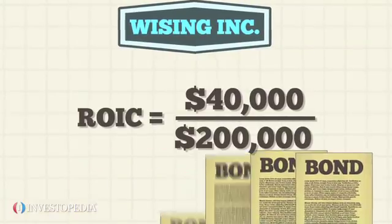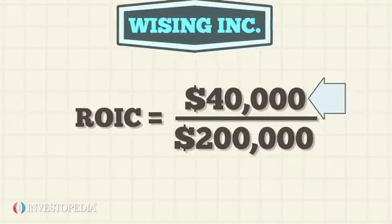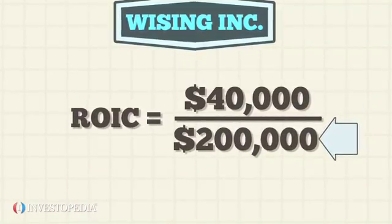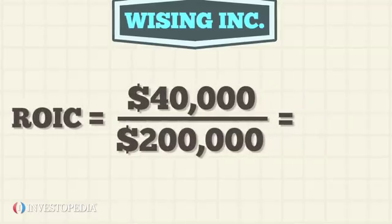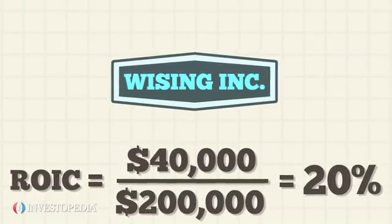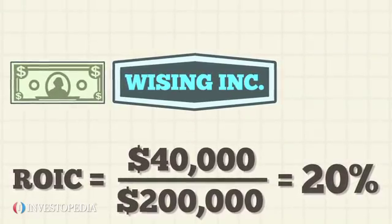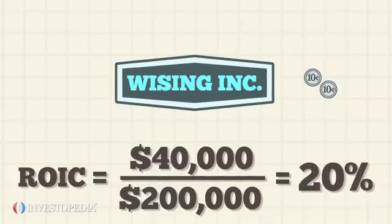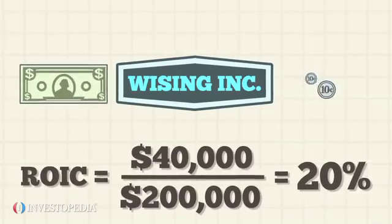its ROIC will be $40,000 divided by $200,000, which equals 20%. This means that for every dollar invested in it, Wising generates $0.20 in income.